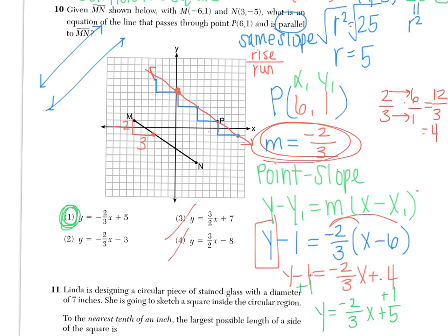But you do need to make sure that you see where your Y intercept is and you know what your slope is. Because the slope was negative 2 thirds, that immediately eliminates 3 and 4 as choices. And then if you count up to your Y intercept, we have 5. So here again, choice 1.